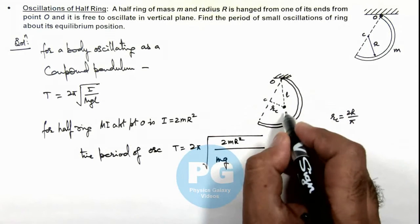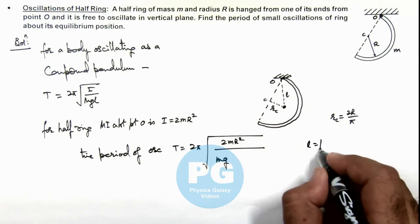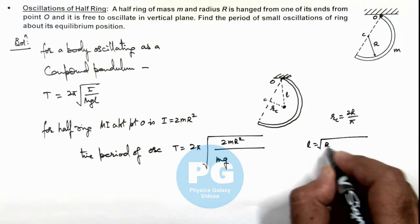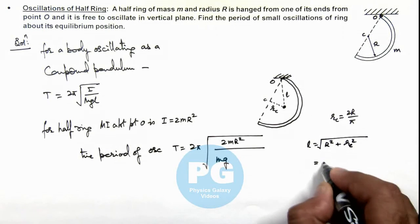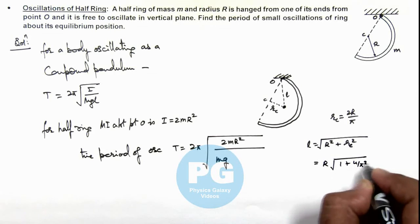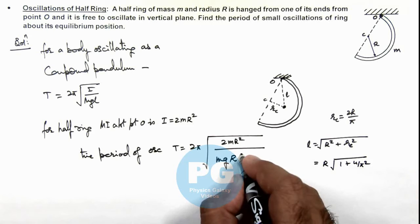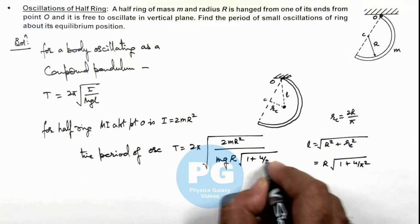The distance of center of mass from suspension point l we can write as √(r² + rc²), which is r√(1 + 4/π²) if we substitute. This is r√(1 + 4/π²).